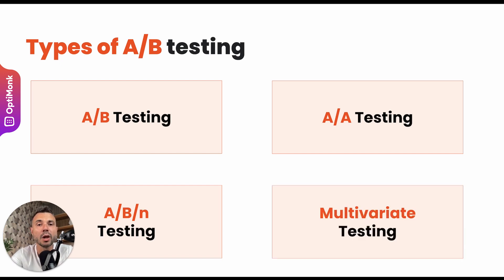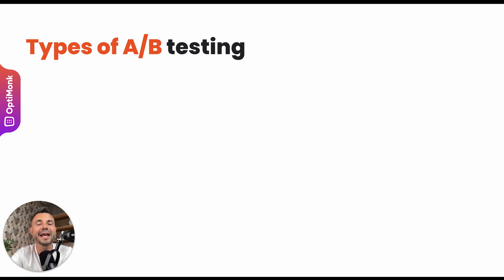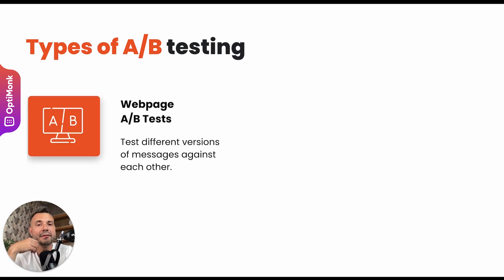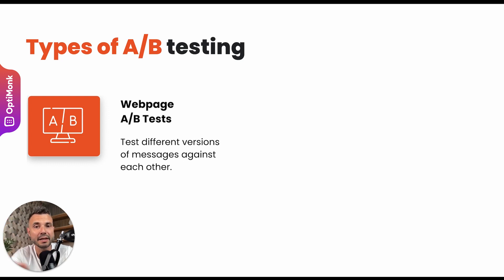We also have what we call multivariate testing, which is about testing multiple things on your website at the same time and testing all kinds of combinations of these different elements. We can also categorize A/B testing depending on what you are actually testing. When we usually say A/B testing, we often mean page or web page A/B testing — having a landing page and splitting the traffic into two different parts, serving them two different versions of that landing page.